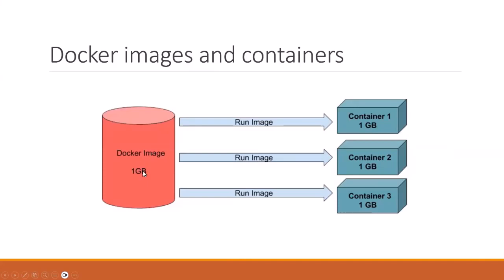A Docker image — one image will be created and stored in a registry. One GB of disk is used for one Docker image. When you run the container it is again one GB only — it doesn't expand and doesn't take much extra. There is just one extra read-write layer on top when you run the image. The same size will be there, it won't take extra space in your Docker engine.